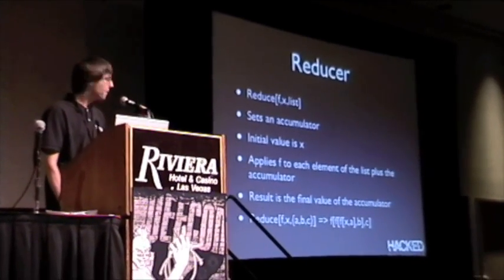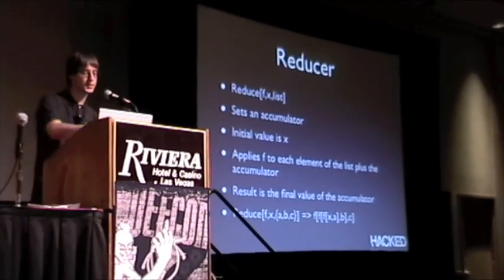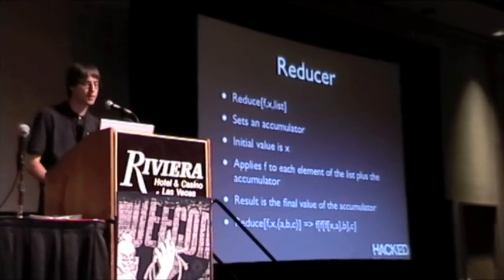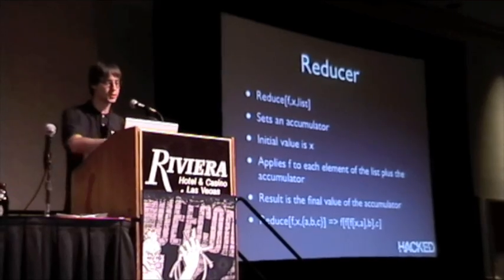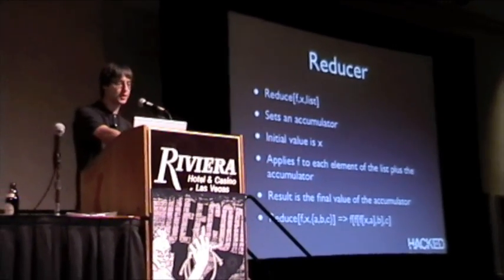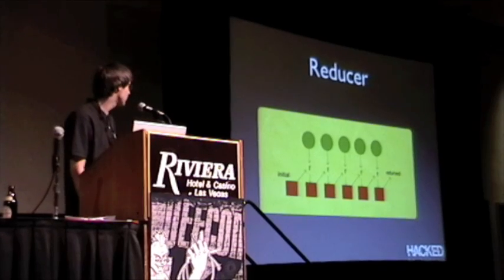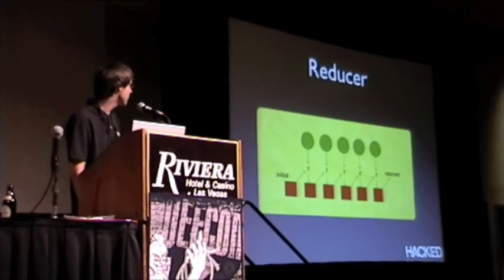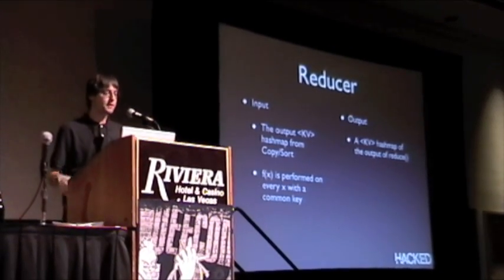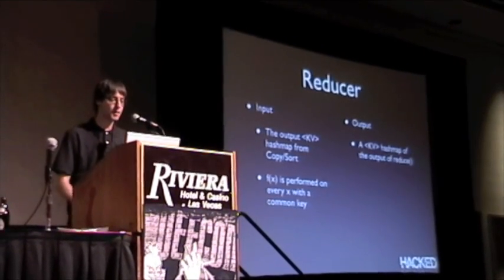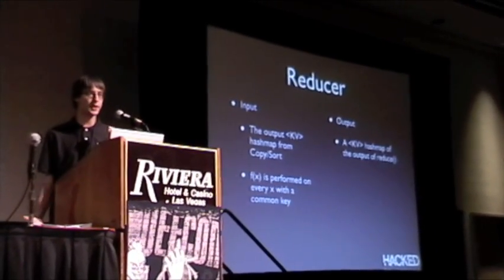The reducer then gets your function, x as an initial value, and the rest of the array list. It sets an accumulator, computes f for the first initial value, then applies f to every element in the list plus the accumulated value. Your final output is what you output from your reducer. Algebraically, you apply f of x where x is your initial value, then a, b, and c — you can see in the picture on the left that it does this recursively, keeping the accumulated values. The input to the reducer is the output key-value hash map from the copy-and-sort phase, f of x is performed on every x with a common key, and the output is another hash map that becomes your text output.